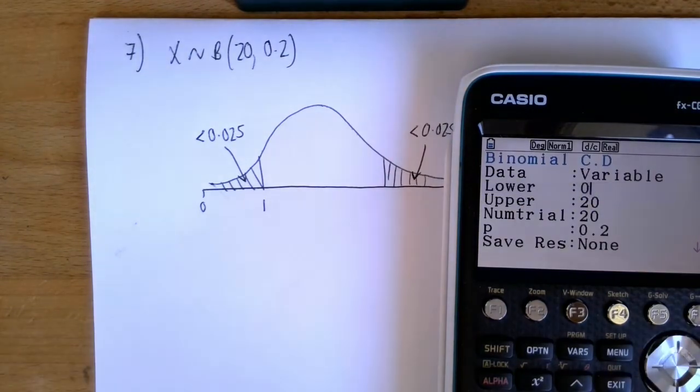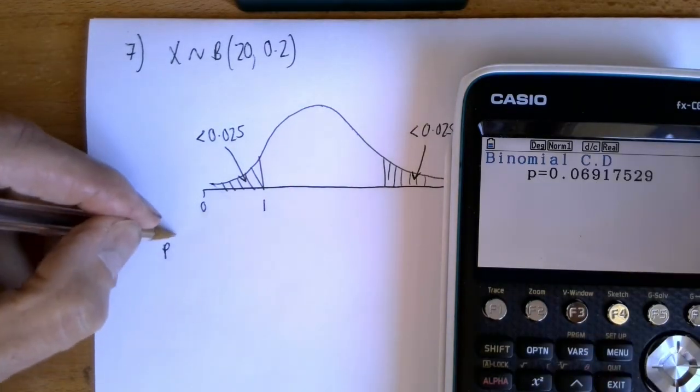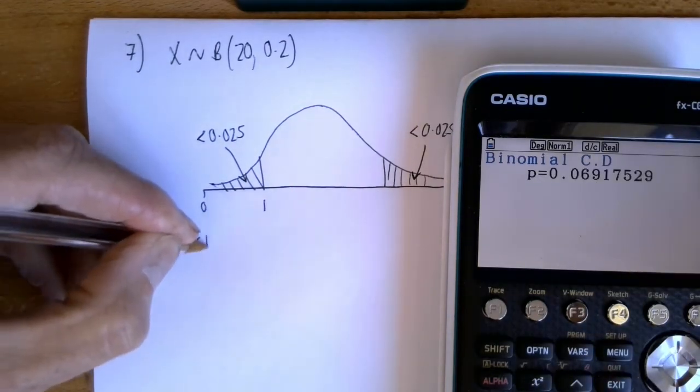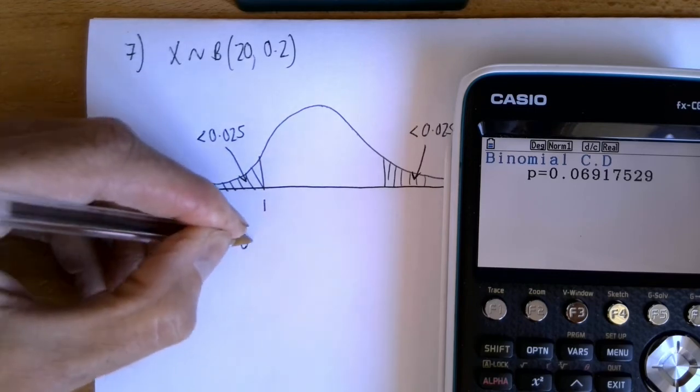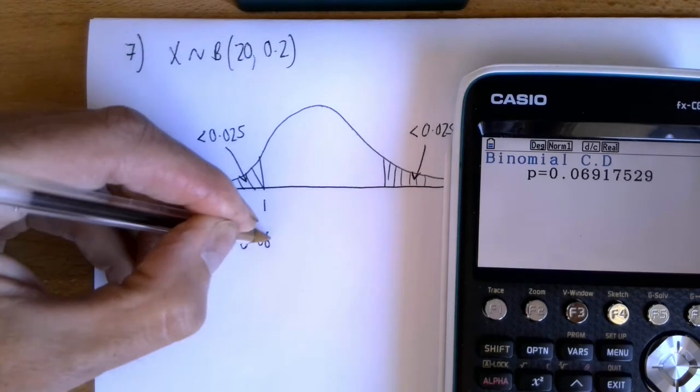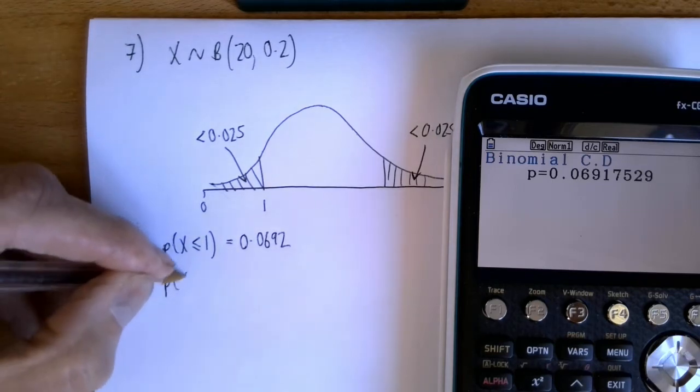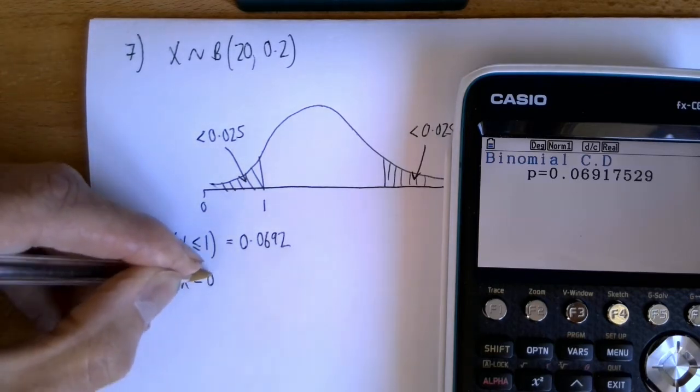a lower of 0 and an upper of 1, that was still—so the probability that X is less than or equal to 1, that's still bigger than 0.025. That's rounded to four decimal places. So what does that mean? Well, let's just work out the probability that X equals 0, and that has a...